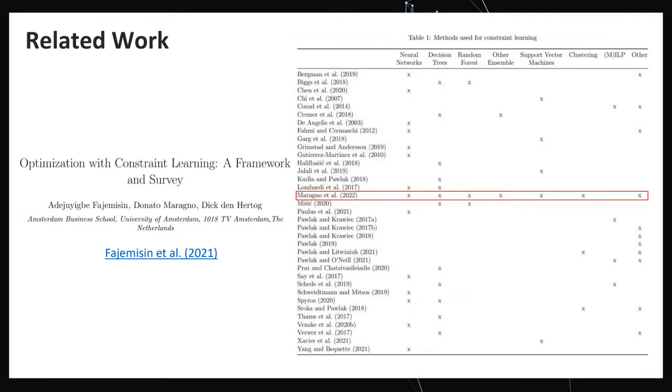Constraint learning is a really hot topic nowadays. Together with Dick den Hertog and Adil Bagirov we wrote a survey about optimization with constraint learning. In this table we can see many different papers that use constraint learning in different ways — the columns show different machine learning models like neural networks or ensembles of trees. Among these papers is the one I am talking about today, where we present how to embed all the most known machine learning models.